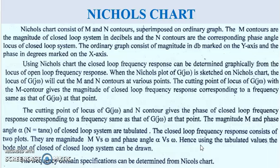The magnitude M and the phase angle alpha — where N stands for tan(alpha) — of a closed loop system can be tabulated. The closed loop frequency response consists of two plots: the magnitude M versus omega, and the phase angle alpha versus omega. Hence, using these tabulated values, the Bode plot of the closed loop system can be drawn.